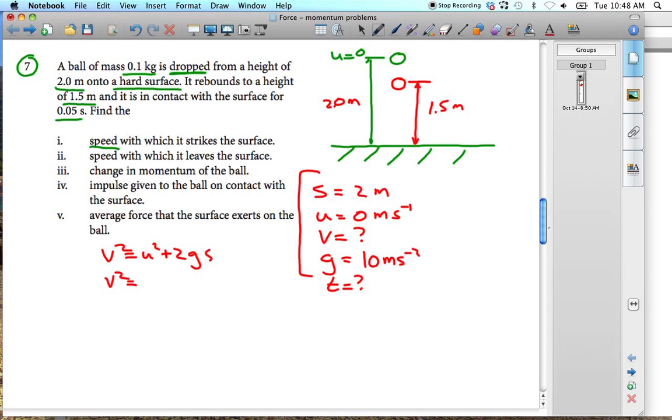So we use V squared is equal to U squared plus 2GS. V squared is equal to - that's 0 - 2 times 10 times 2. So we're going to get that is 40 equals V squared. V is equal to the square root of 40. We can just do that on our calculators. The square root of 40, and we get V is equal to 6.32 m per second. So that's the first part. That's part 1.